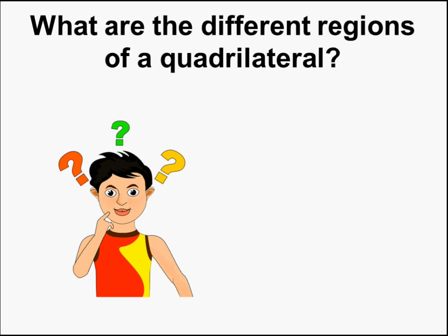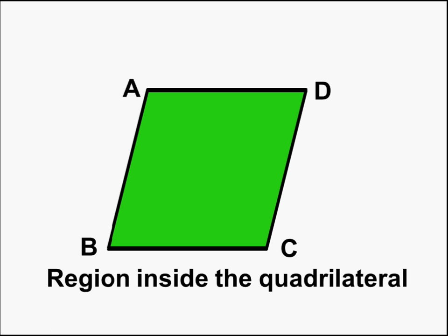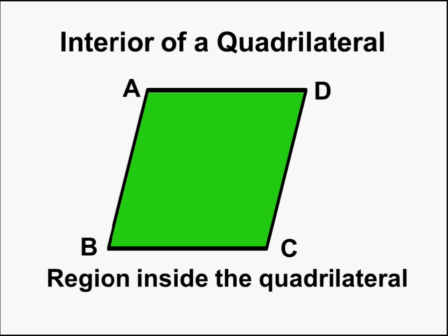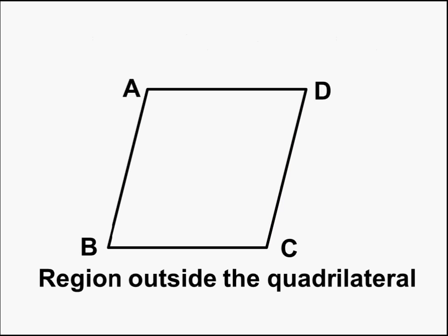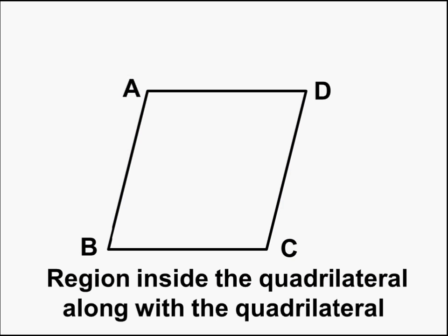Now let's see about different regions of a quadrilateral. What are these? Let us see. First, what is the region inside the quadrilateral? The green colored region is inside the quadrilateral, and we can say it is the interior of a quadrilateral. Same way, which is the region outside the quadrilateral? Here, this blue colored region is the region outside the quadrilateral, and we say it is the exterior of a quadrilateral.